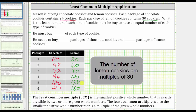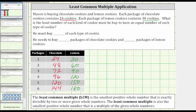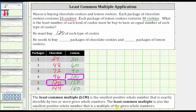Looking at the number of cookies, notice how the smallest number that appears in both lists is 120. This tells us Mason must buy 120 of each type of cookie, because 120 is the least number of each type he can buy to have an equal number of each. And 120 is called the least common multiple, or LCM, of 24 and 30 — the smallest positive whole number that is a multiple of the given whole numbers, and the smallest positive whole number that is exactly divisible by both 24 and 30.